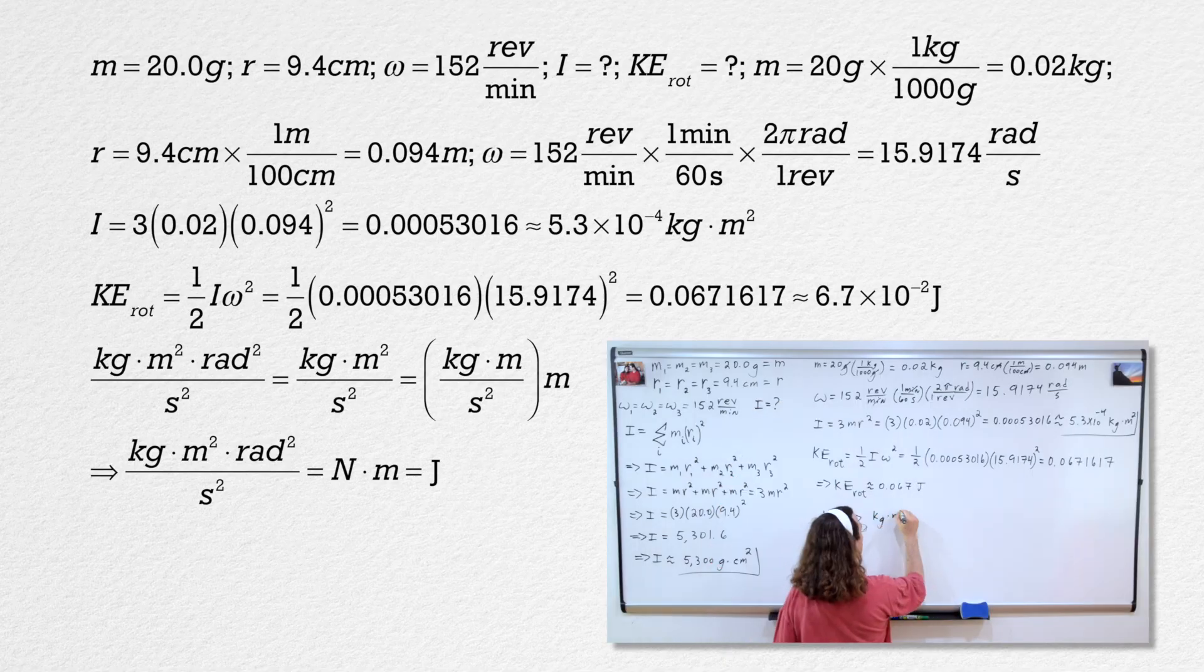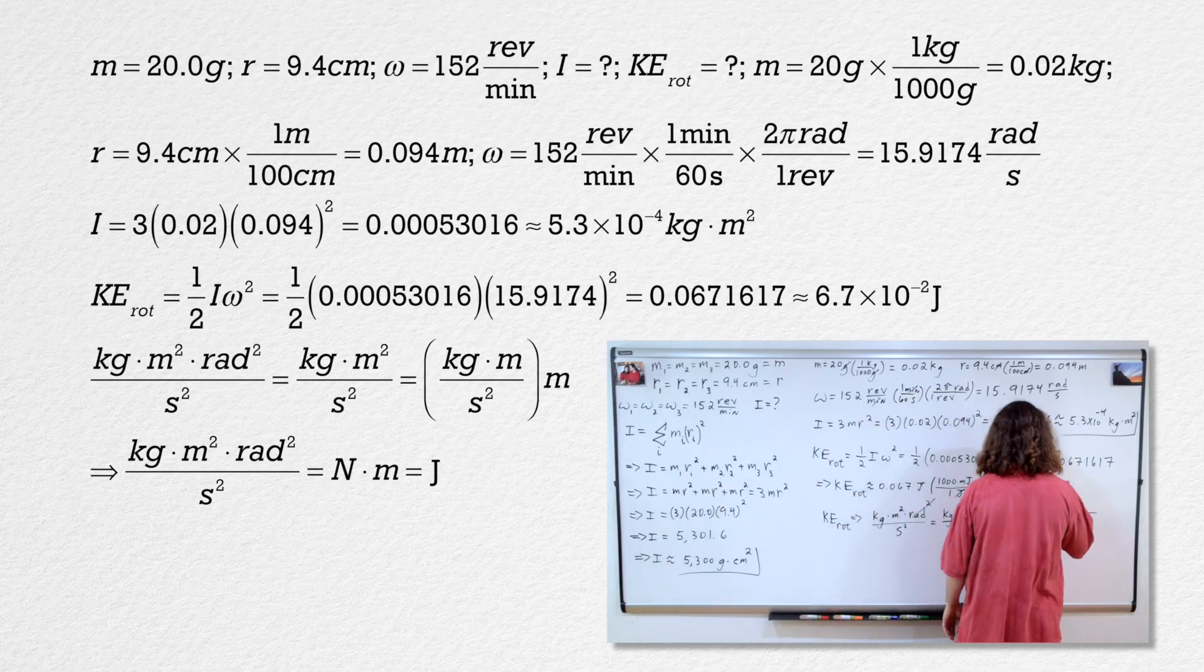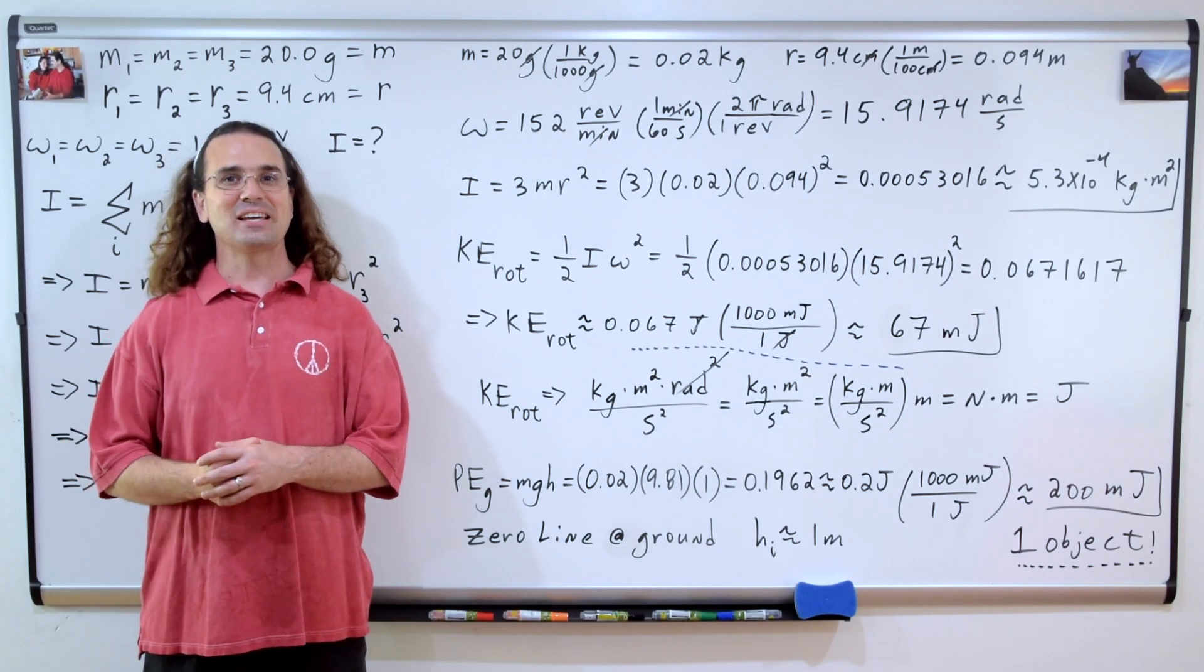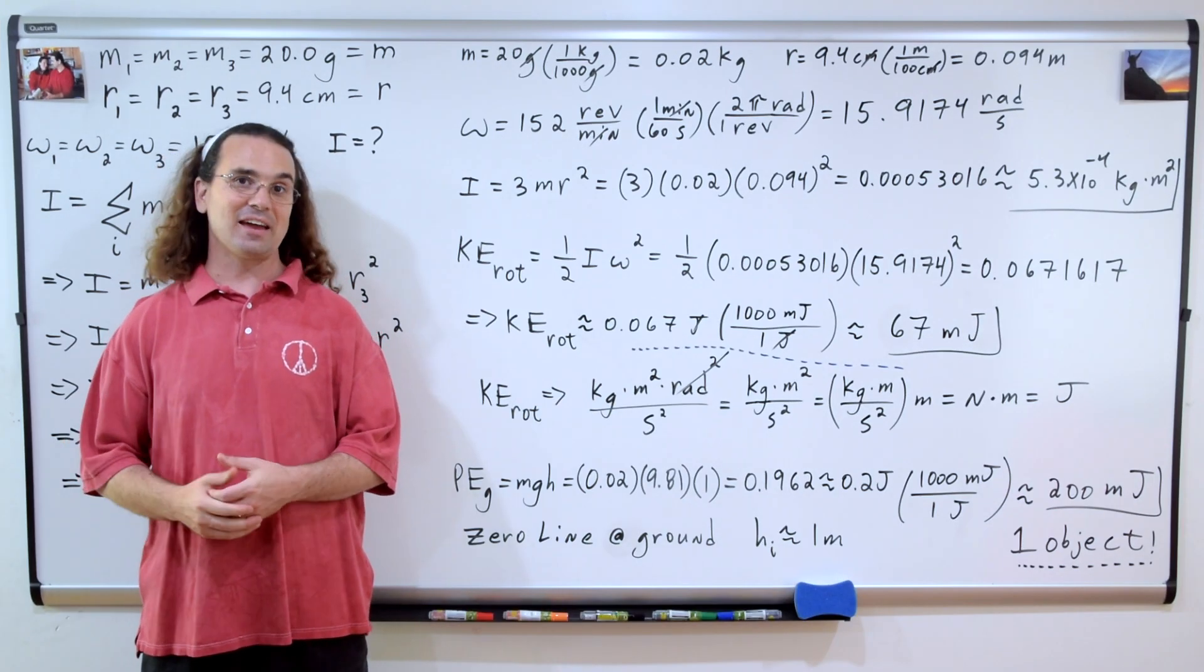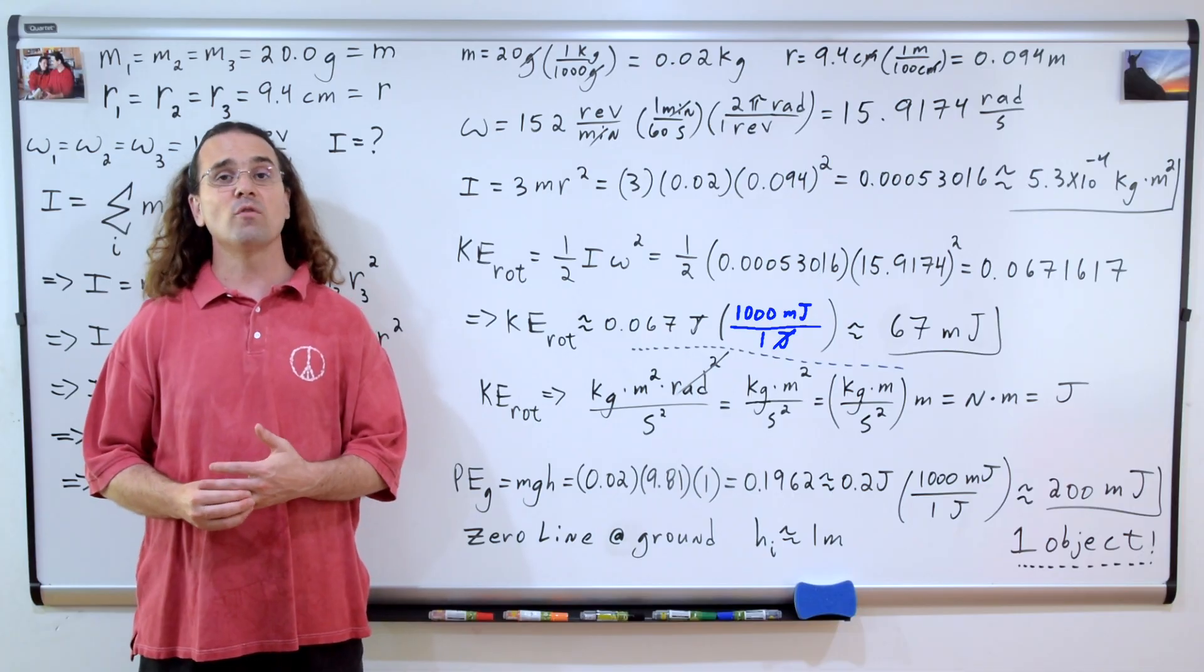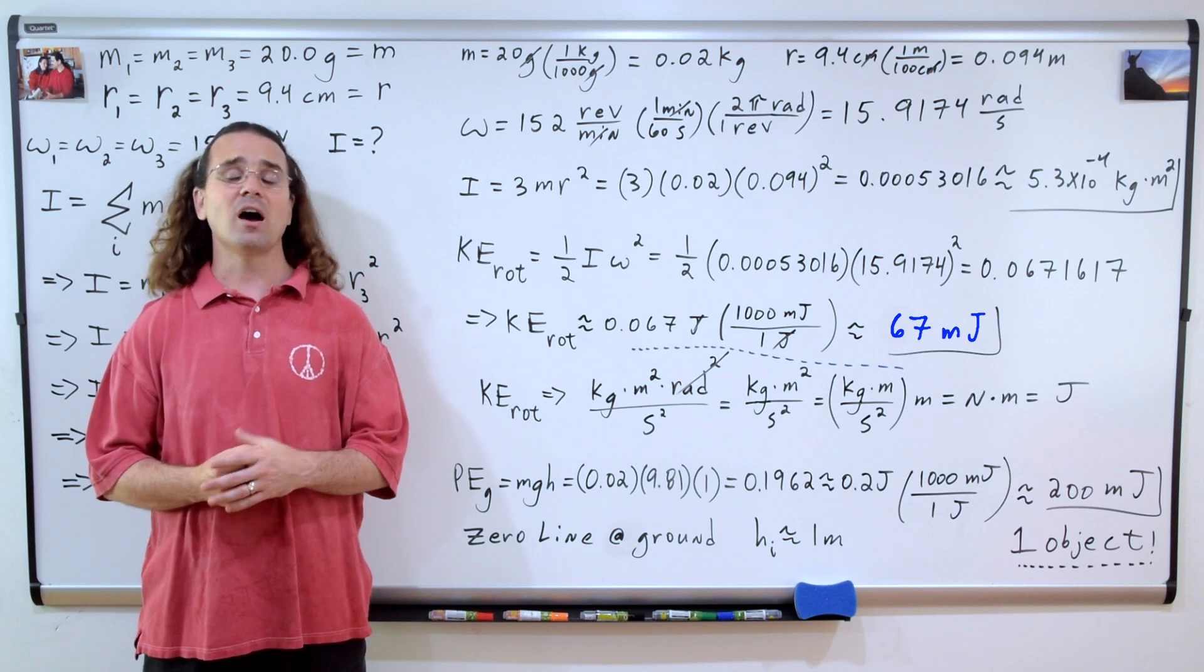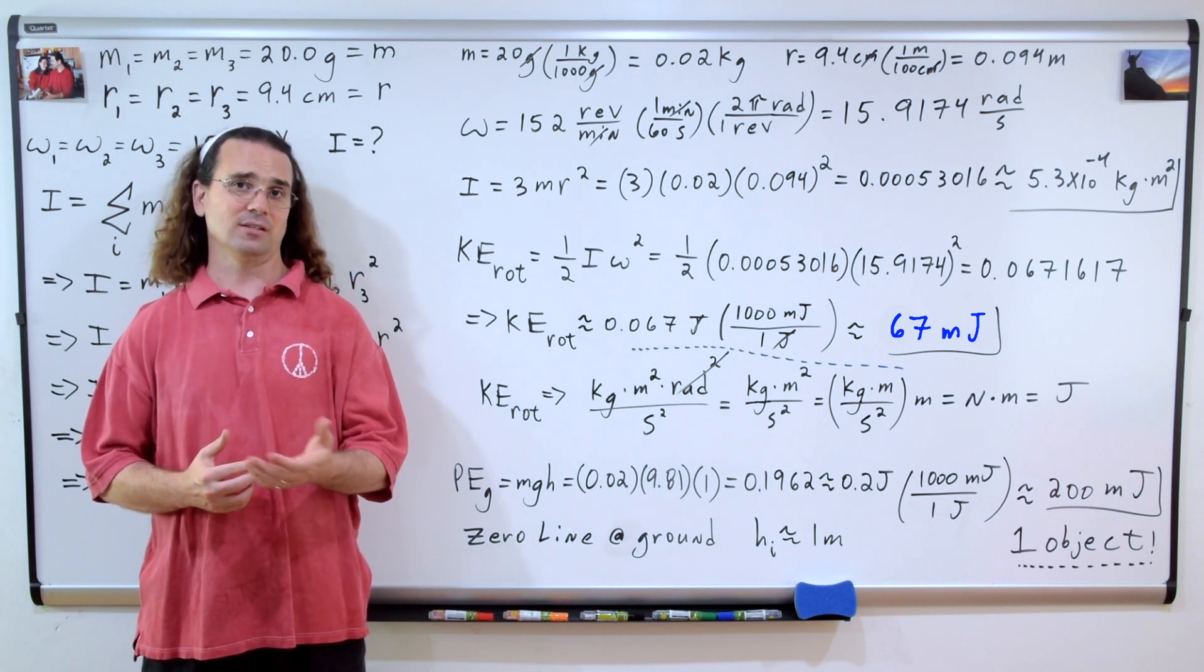And just for fun, we can multiply our rotational kinetic energy by 1,000 millijoules over 1 joule to get 67 millijoules for the rotational kinetic energy of our three rotating object system.